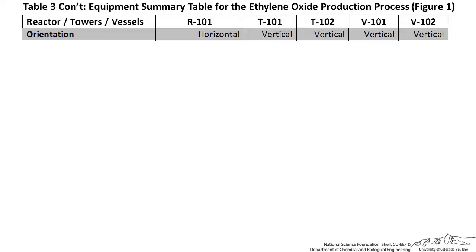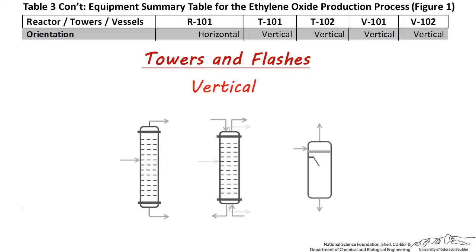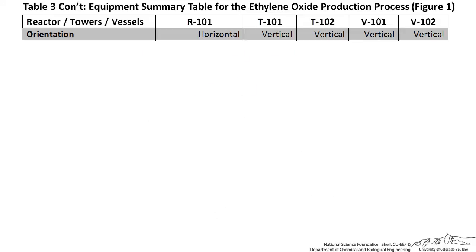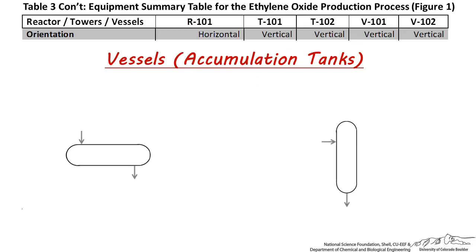Regarding the orientation of towers and flashes, these are almost always a vertical orientation, since this facilitates vapor-liquid separation and separation based on density. And regarding the orientation of vessels, these vessels are examples of horizontal and vertical accumulators.